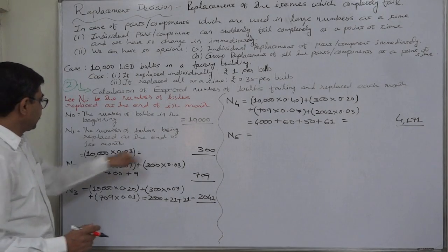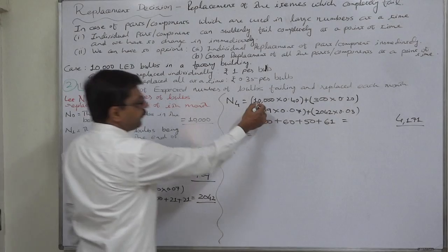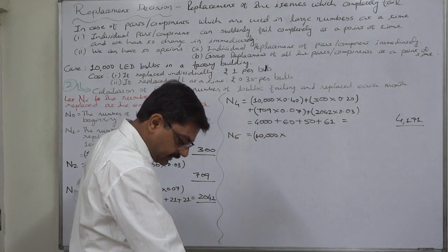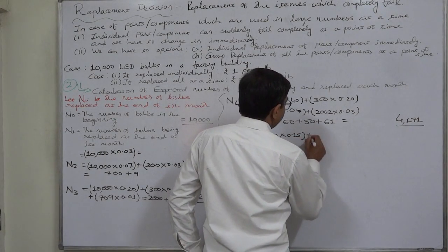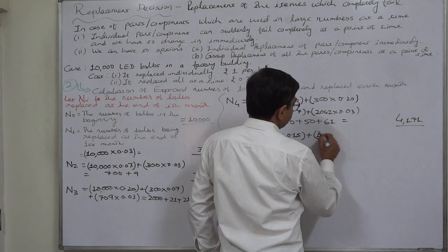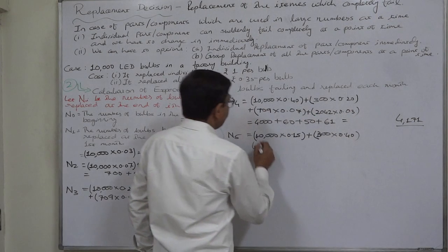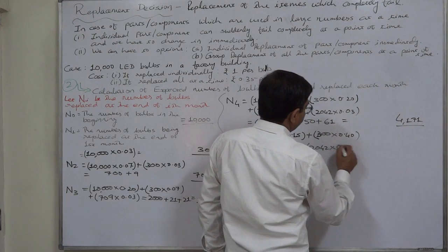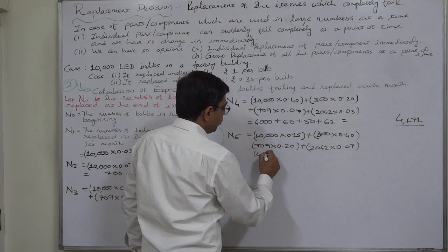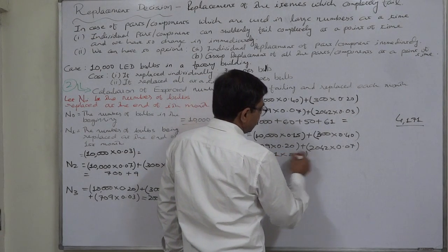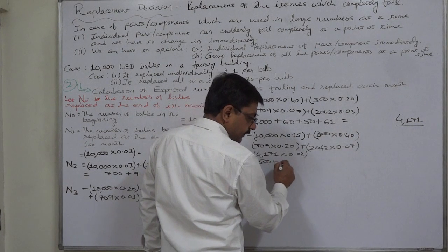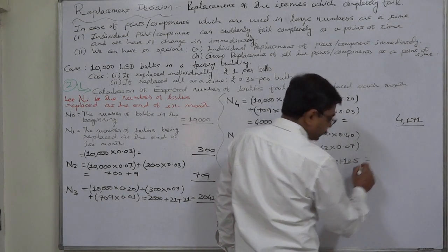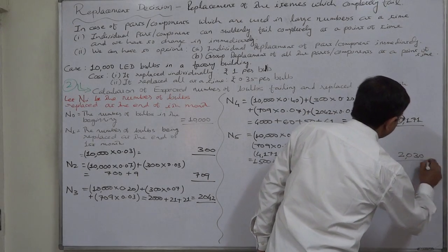N5 is the number of bulbs being replaced at the end of the fifth month. Fifth month for the original 10,000: 10,000 into 0.15. Fourth month for 300: 300 into 0.4. Third month for 709: 709 into 0.2. Second month for 2,042: 2,042 into 0.07. First month for 4,171: 4,171 into 0.03. That gives 1,500 plus 120 plus approximately 142 plus approximately 143 plus approximately 125, for a total of approximately 2,030 replacements during the fifth month.